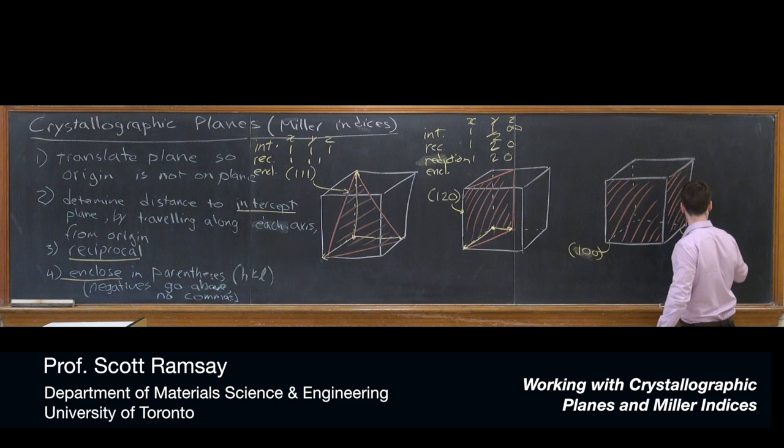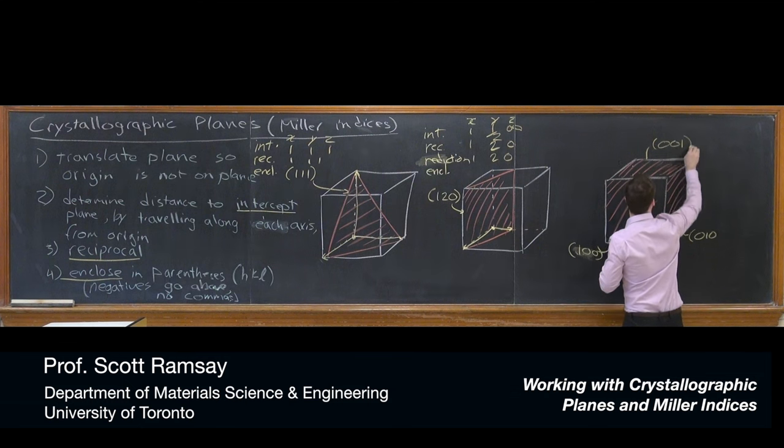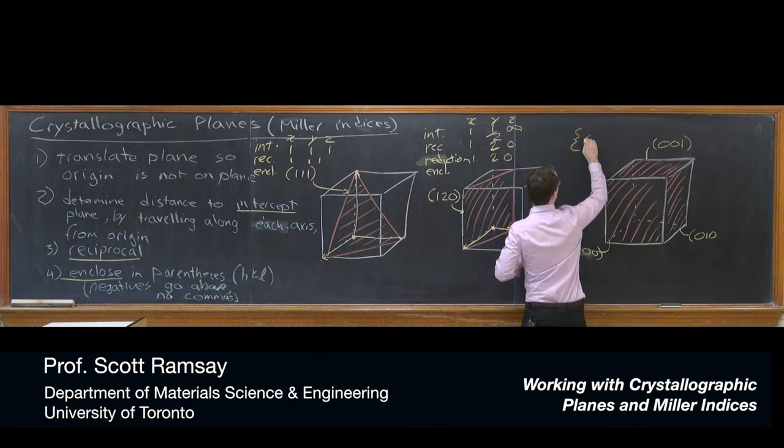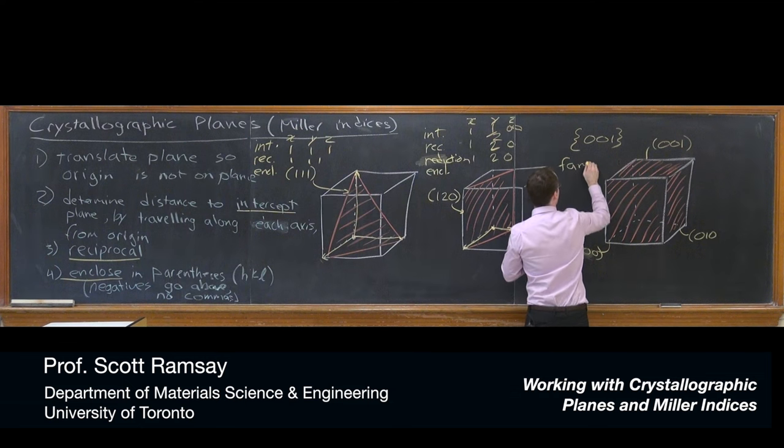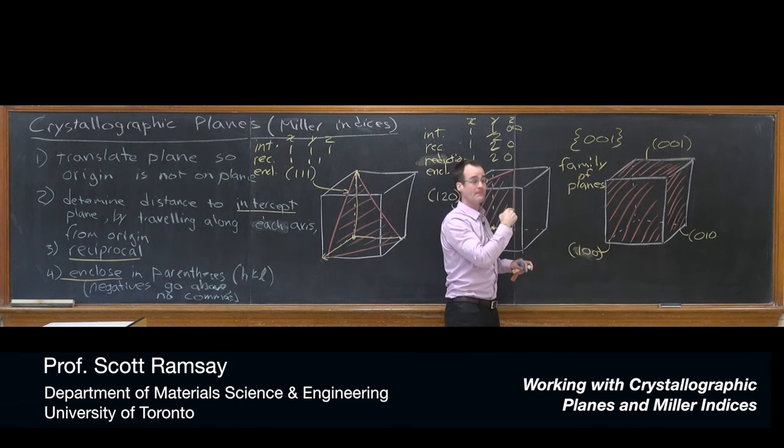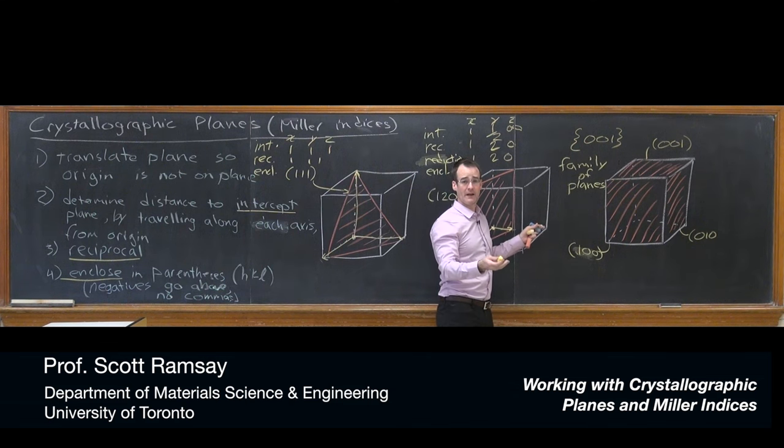This plane over here specifically is (0,1,0), and the top is (0,0,1). Together, we would call all of those the {0,0,1} family of planes. For this cube, there's actually only three specific planes in the {0,0,1} family. We've moved the zeros to the left-hand side, the non-zero values to the right, and reduced the number of negative signs.